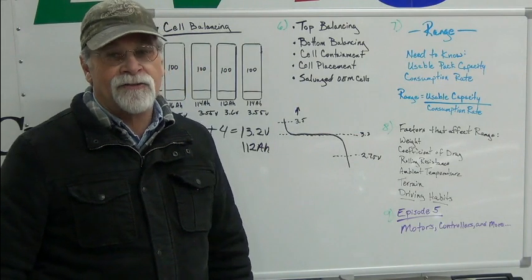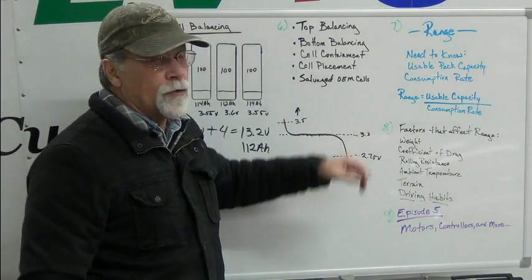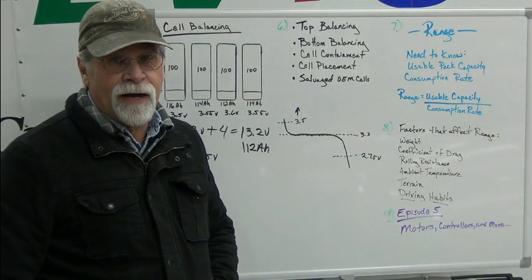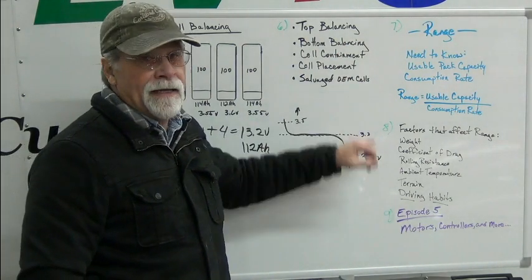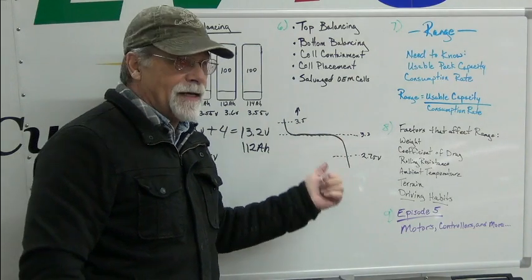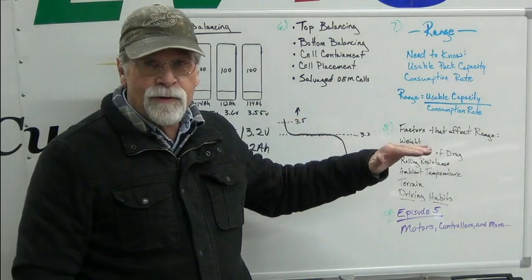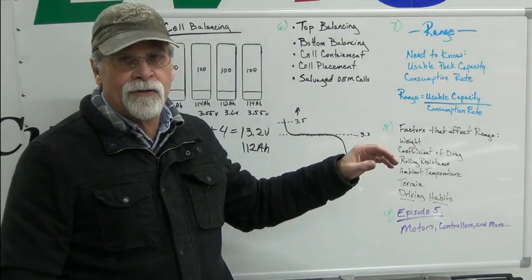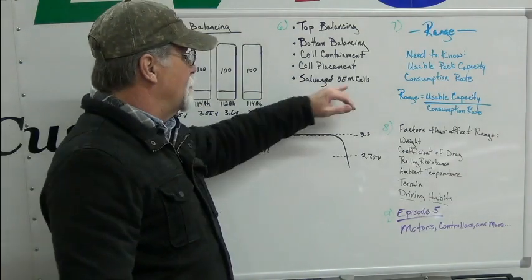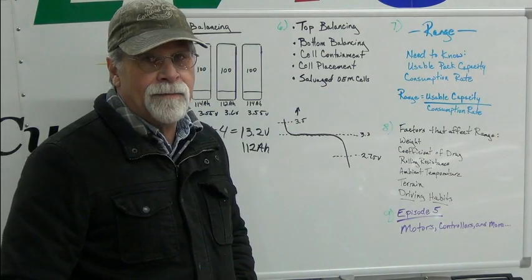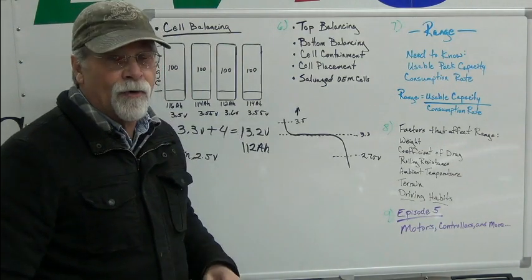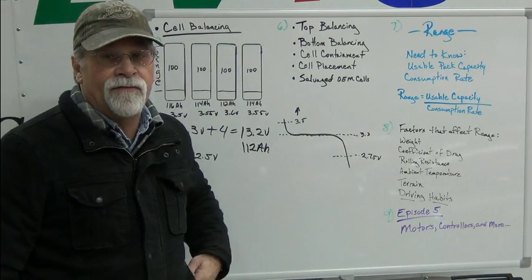Salvaged OEM cells are real popular in conversions. All of the same information we've talked about applies. Be aware of your voltages — we used the Tesla Model S modules as an example in a previous episode. You still have three voltages whether it's an individual cell, a whole battery pack, or a module. You need to know those parameters. You still have to contain them and keep them safe. Cell placement is still important regardless of the type of cells you're using.